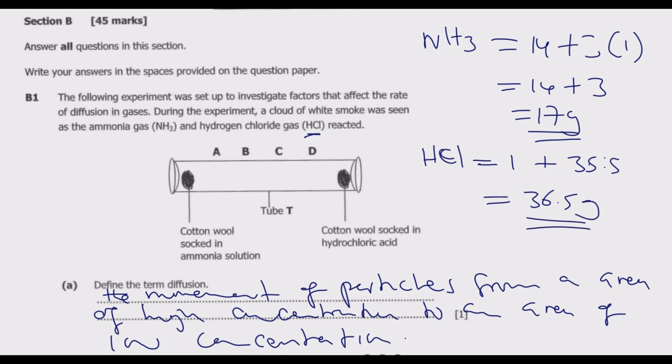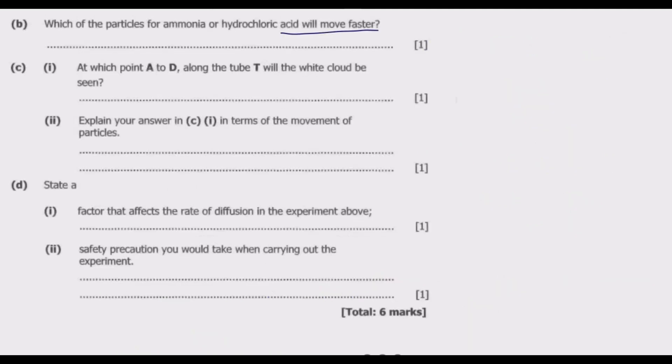So we know from this that ammonia is lighter than the hydrochloric acid. So in terms of movement, ammonia is going to move faster than hydrochloric acid. So ammonia is the answer. We write ammonia gas.